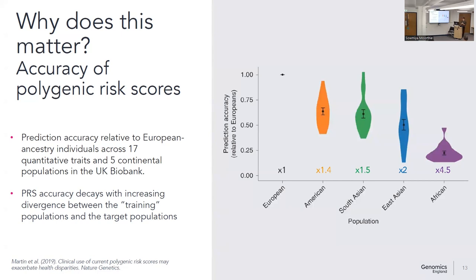This slide looks at the transferability of polygenic scores — a type of risk score. By and large, when you train a polygenic score on a population of European ancestry and apply it to different ancestries, you find it less transferable as you move across those ancestries. On average, a PRS developed on European ancestry applied to an individual of African ancestry is roughly four and a half times less accurate.